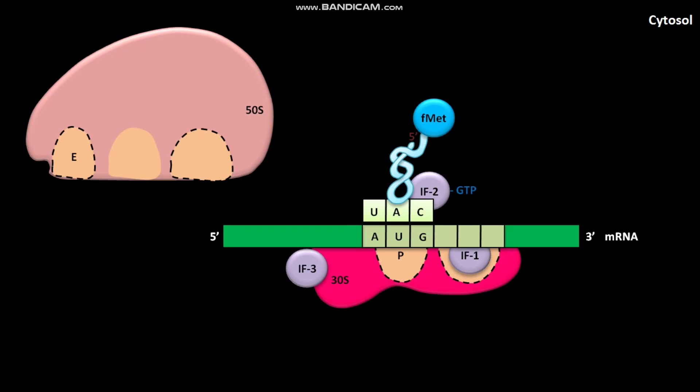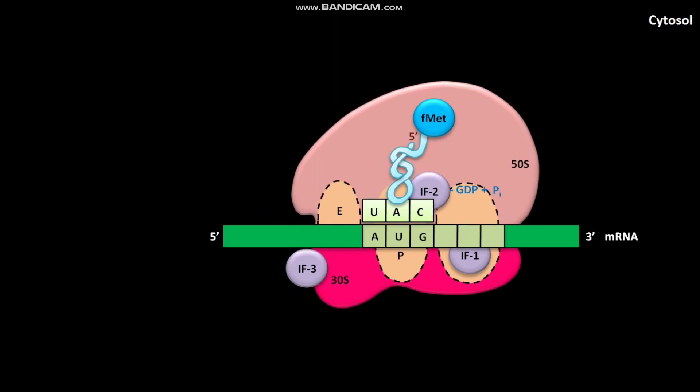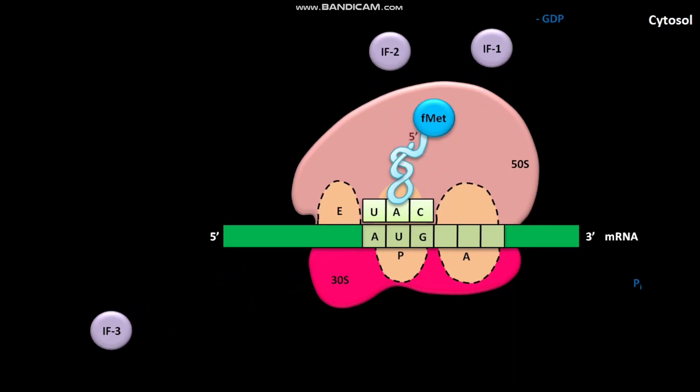The complex containing 30S subunit, IF2-GTP, fMet-tRNA, IF1, and IF3 combines with 50S ribosome subunit. At the same time, the GTP bound to IF2 undergoes hydrolysis to produce GDP and Pi. The GDP and Pi are then released from the complex. IF1, IF2, and IF3 then depart from the ribosome.